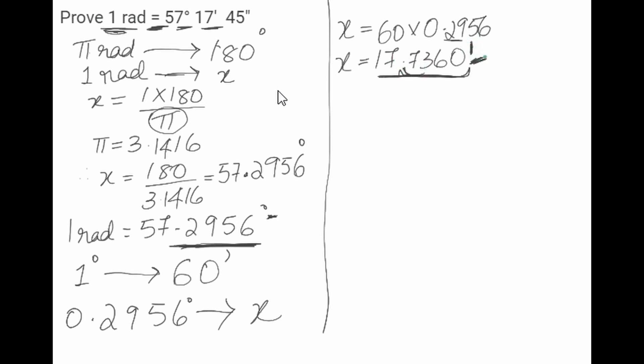We all know that 1 minute is equal to 60 seconds. Therefore, 0.7360 minutes would be how much in seconds? When we do the cross multiplication, we get...